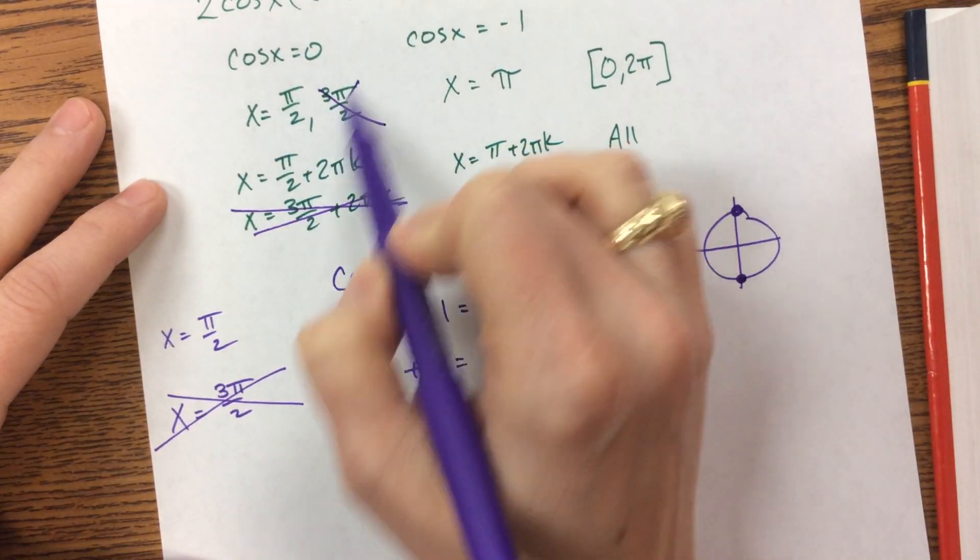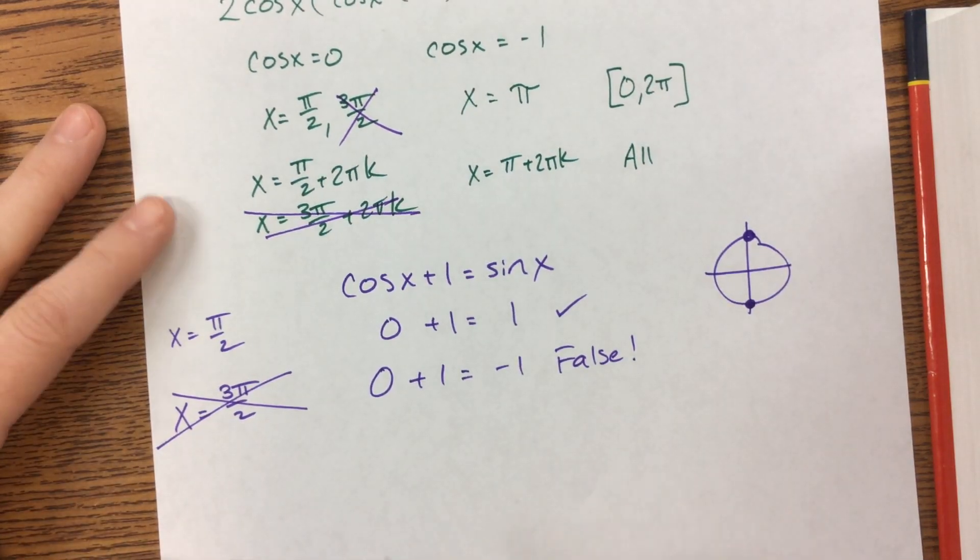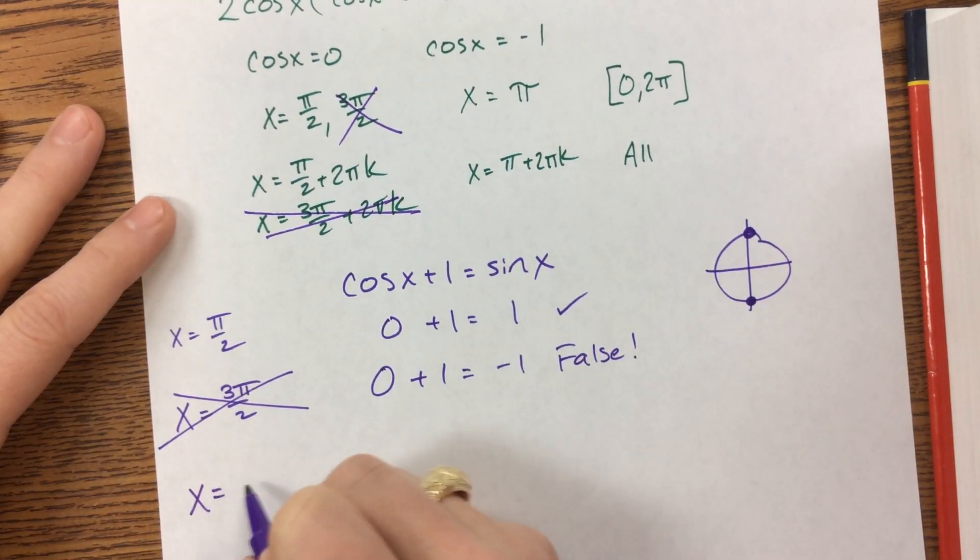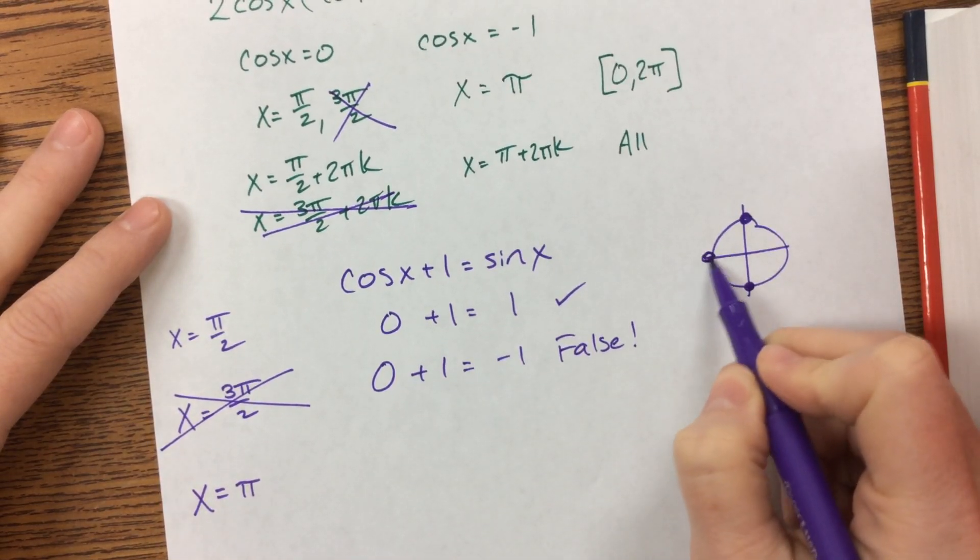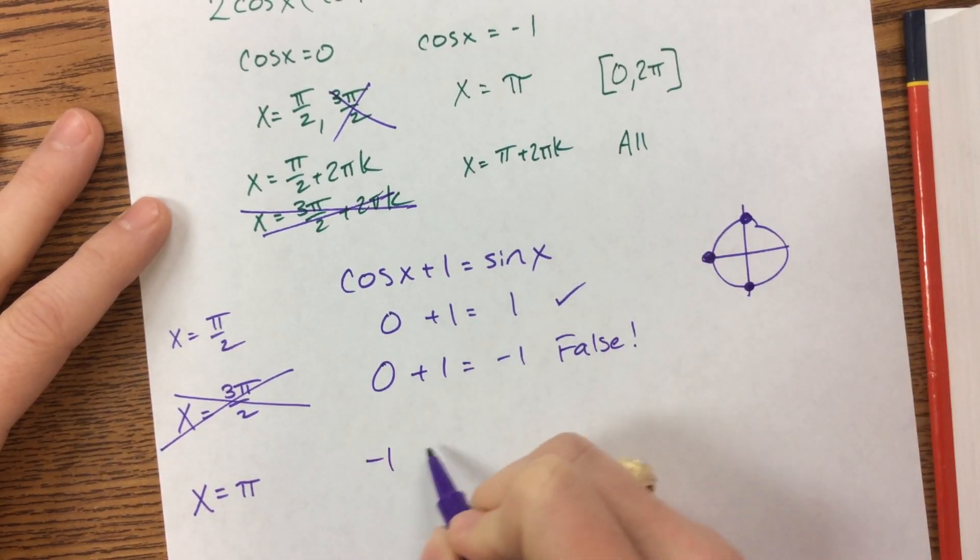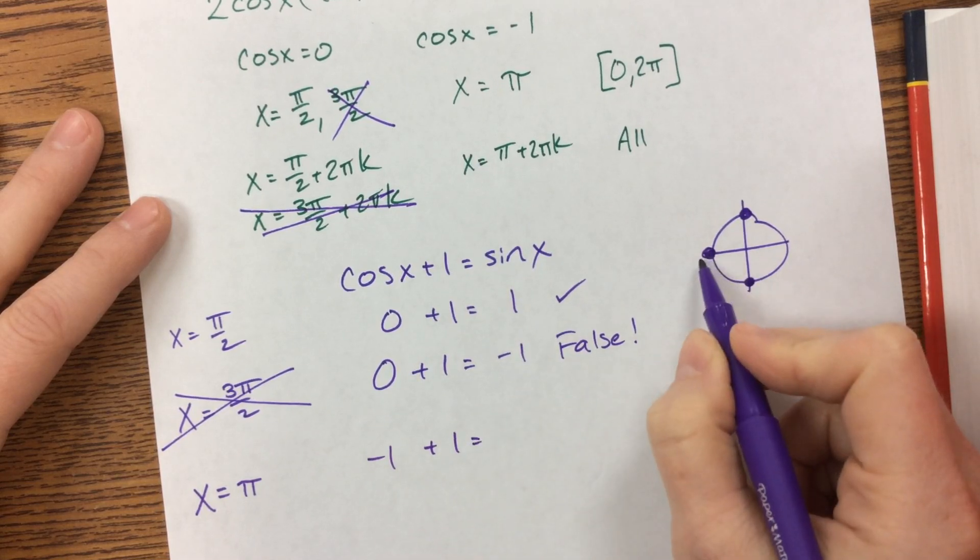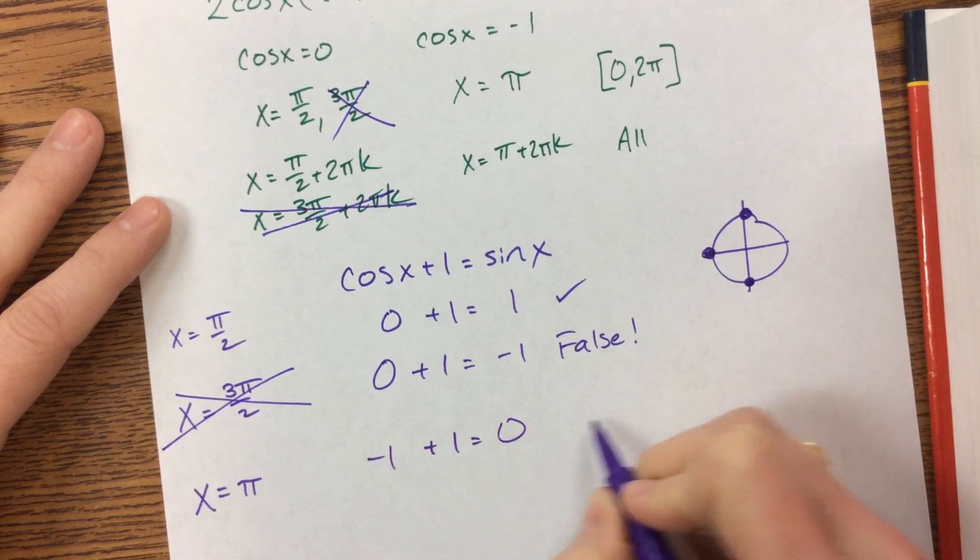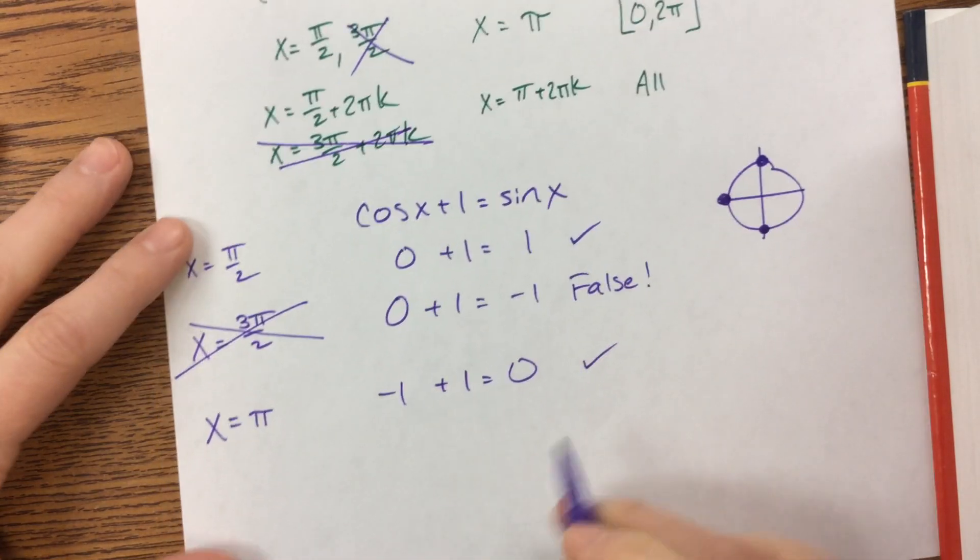So coming back here, we're going to eliminate anywhere we had 3 pi over 2. So then I can check the last one, x equals pi. So cosine, that's over here. Cosine is negative 1 plus 1 equals sine at pi is 0, and that is a true statement.